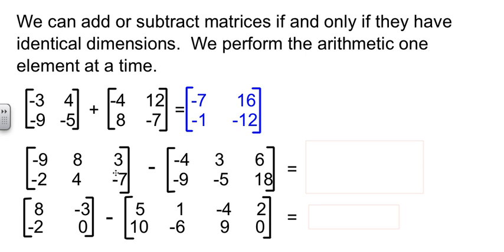Look at our second one. We can tell by looking that they're both two rows, and they're both three columns. So now we can do the arithmetic. Negative nine minus negative four. Eight minus three. Three minus six. Negative two minus negative nine. Four minus negative five. And negative seven minus eighteen. And if I've done my arithmetic correctly, I have my result matrix there.